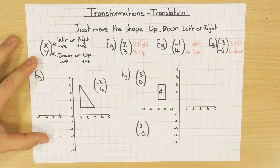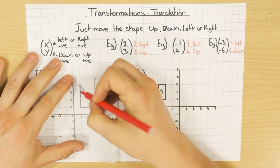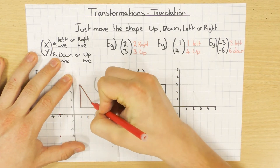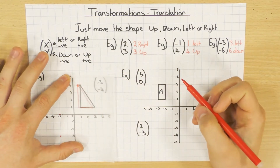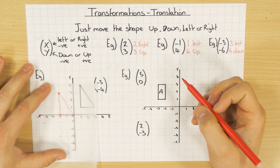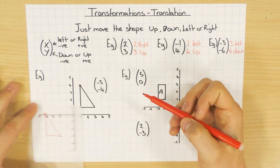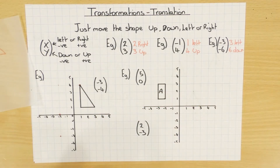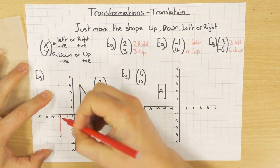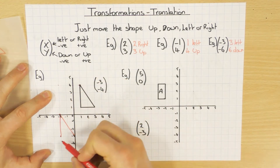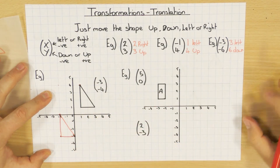Alternatively, you can use tracing paper — get a bit of tracing paper and trace the shape. Then move it 3 left and 4 down, lining it up properly. You'd use a ruler to do this in the exam, so that's your translated shape there.